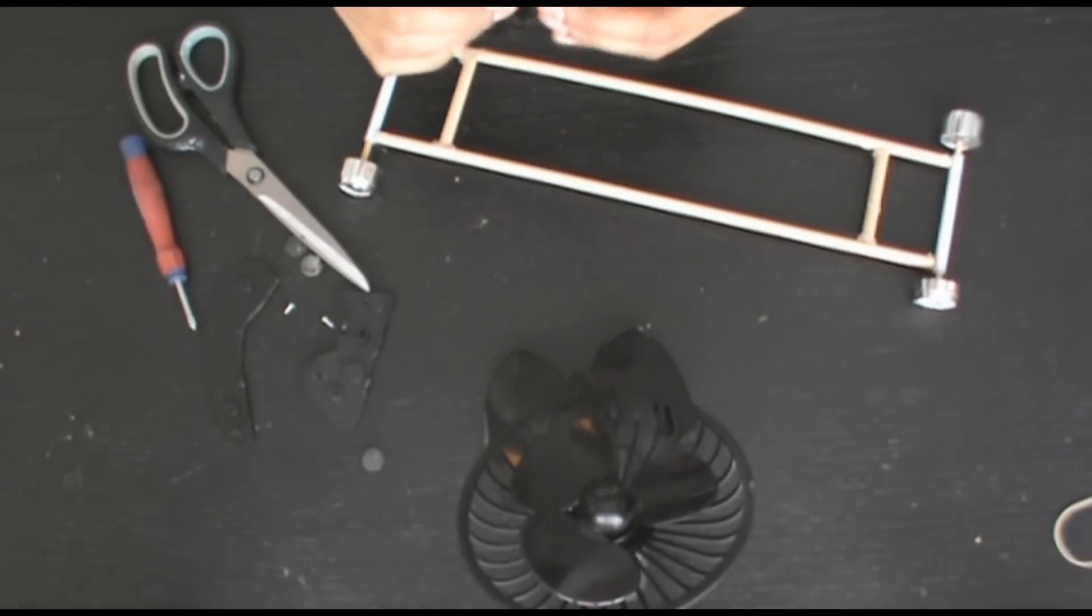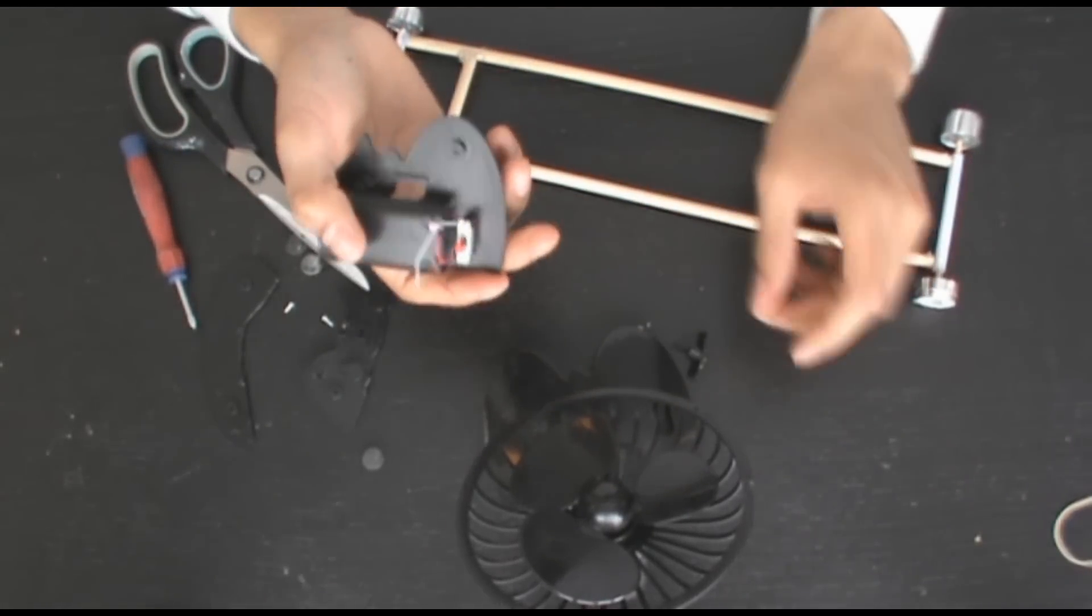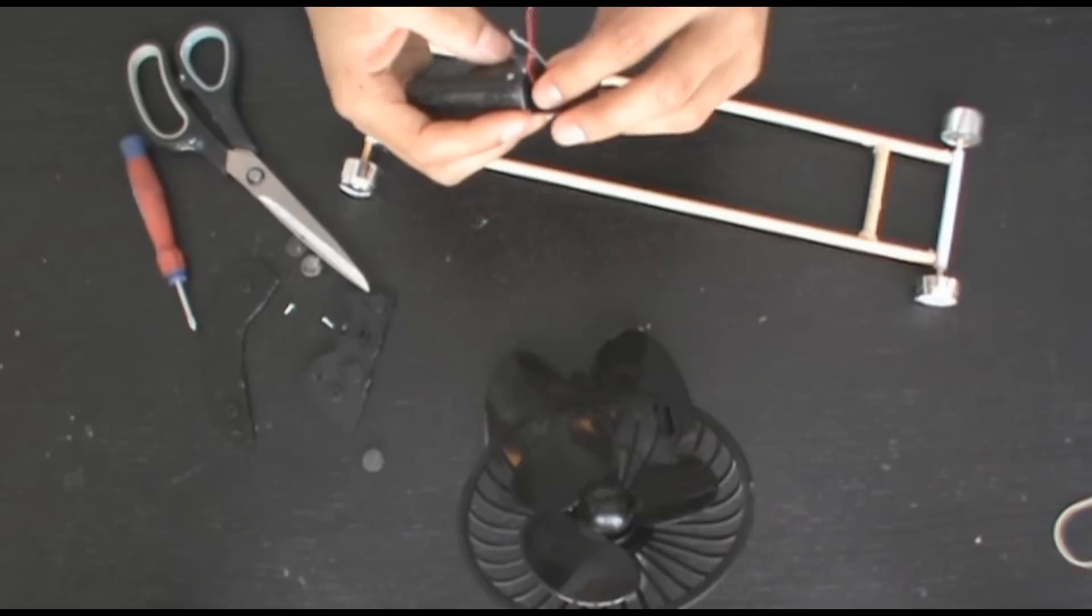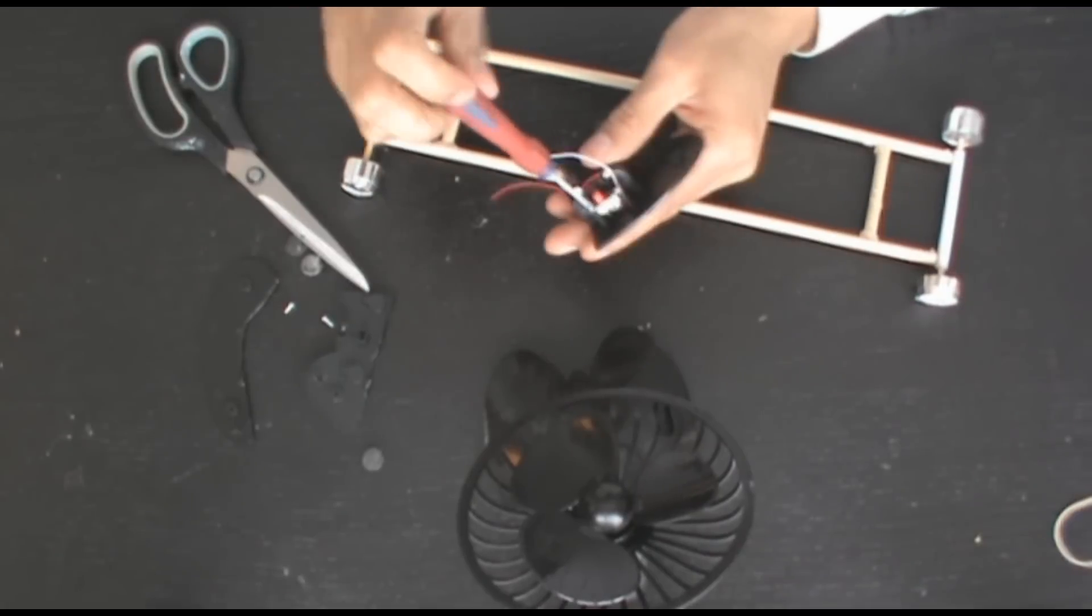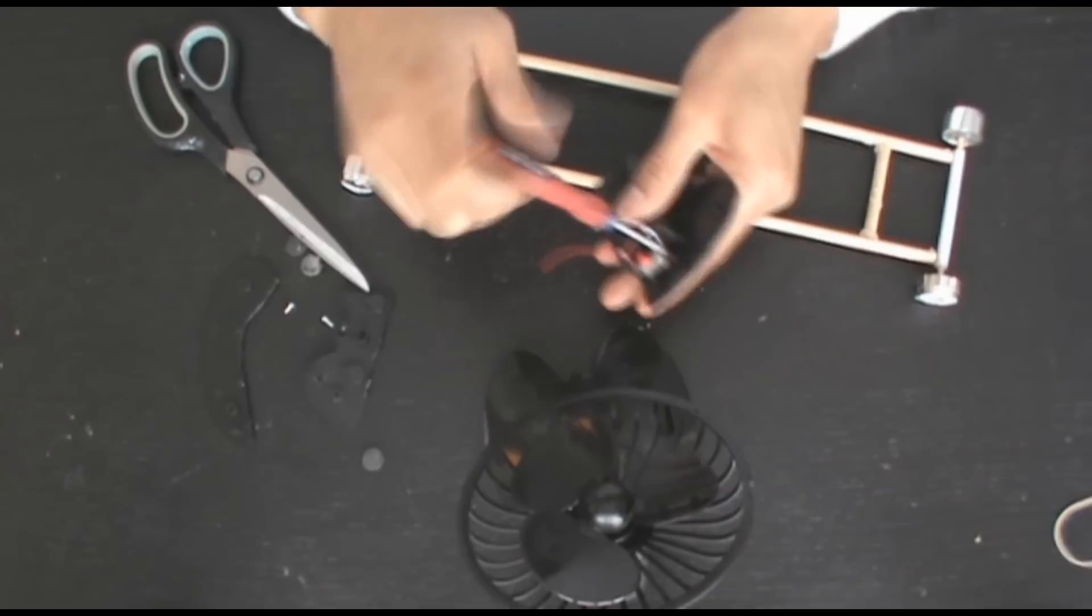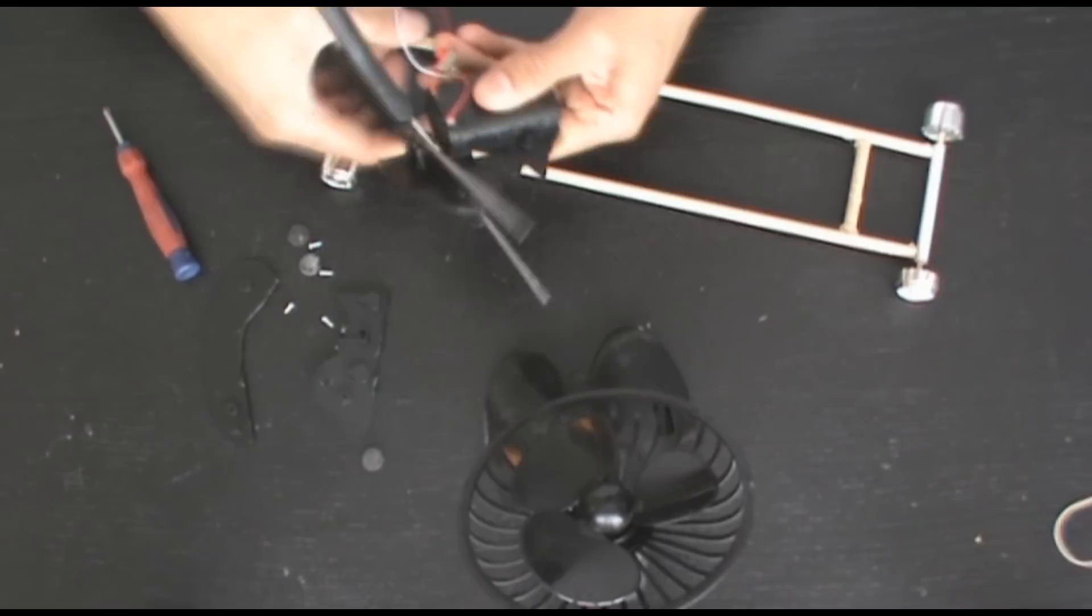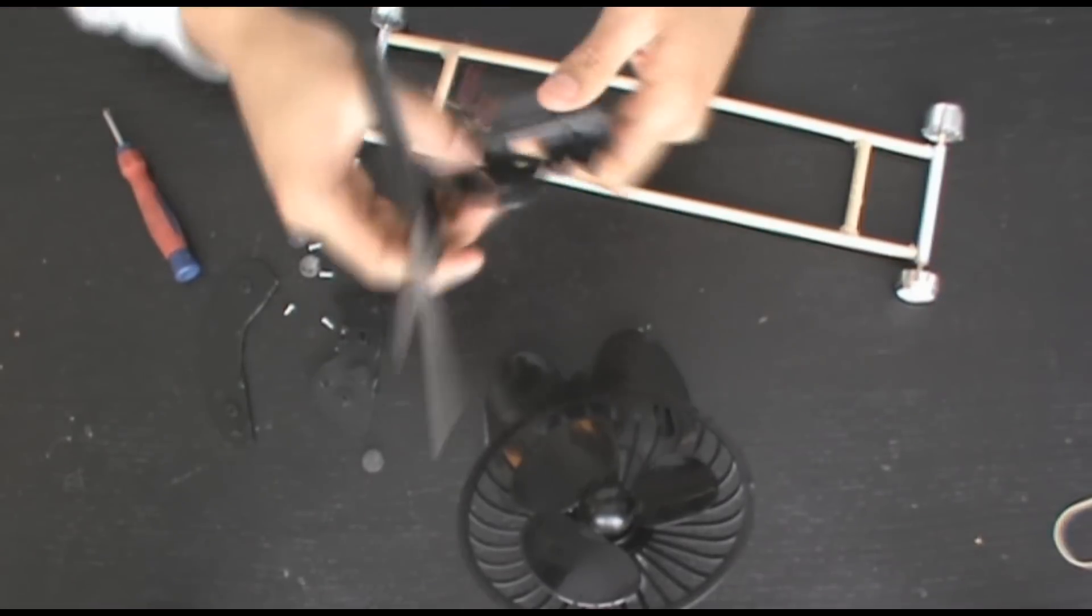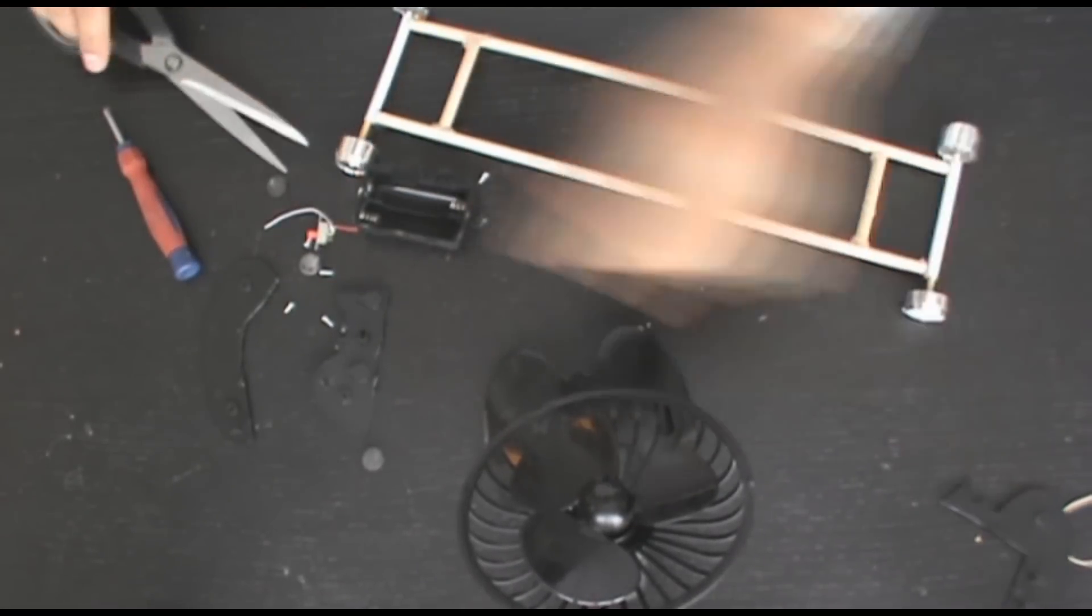I'm going to snip the wires just to make it easier to take everything apart. We're going to have to reattach some of the wires afterwards. Now from this I also want the switch so I'm going to unscrew that and trim the battery pack down a little more.